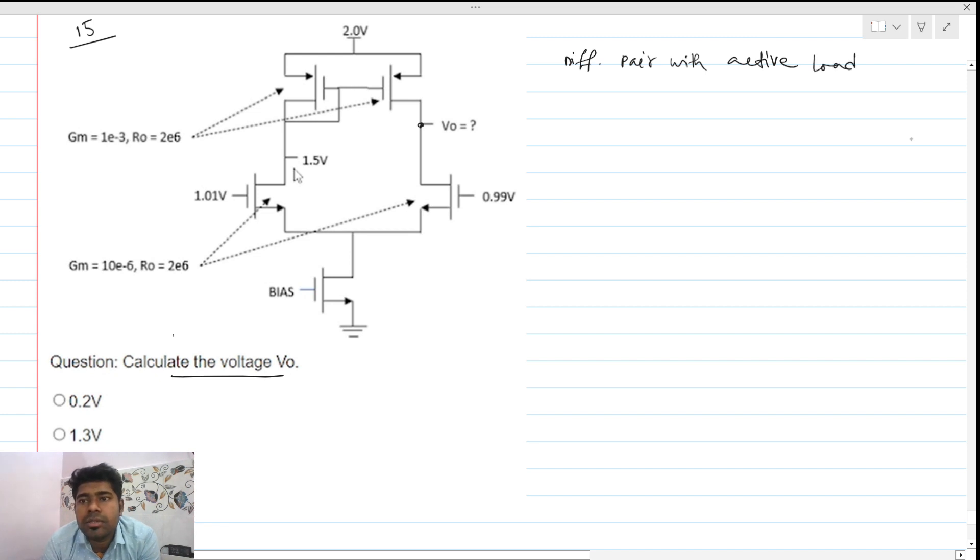Active load, or we know it as a differential pair - like an input differential pair, but the output is taken as single ended. A single ended output circuit.